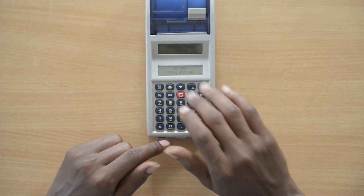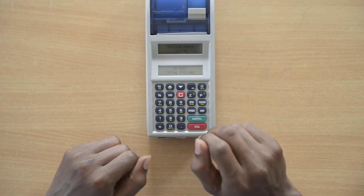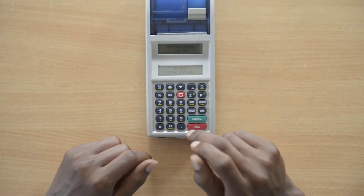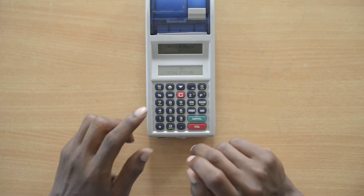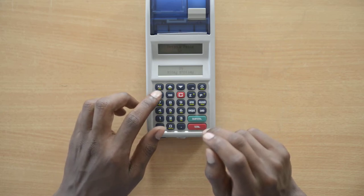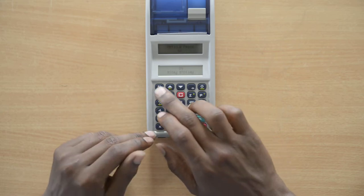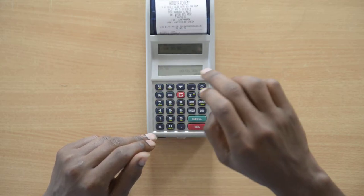Once you select number 10, it will become article price. Here you can put the price amount, for example 50. Then you select PLU times 2. PLU means product list unit. You select times 2, one two. Once you select PLU times 2, it will print out.